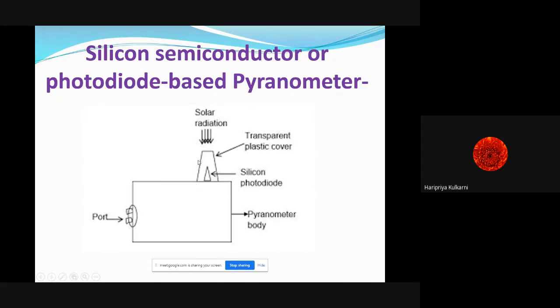This is a diagram using a silicon photodiode as a sensor with a transparent glass or plastic cover. Solar radiations - you can observe here only this part is transparent - so it can measure only direct solar radiations falling on it. Its output is converted into electrical current collected at these two ports, and we can measure the direct solar radiation.